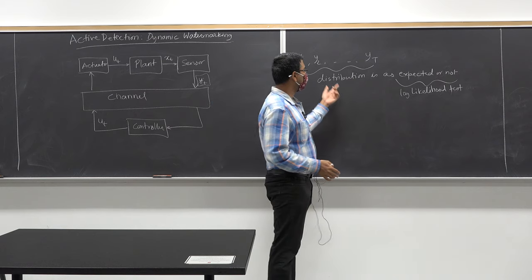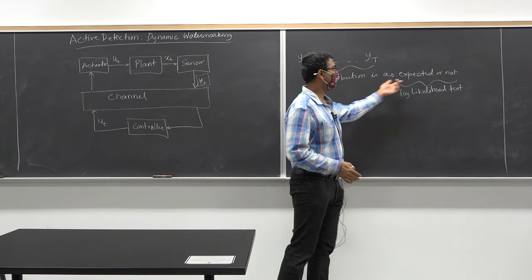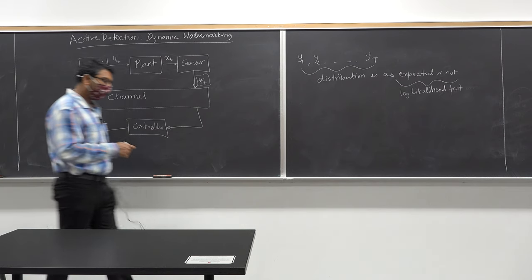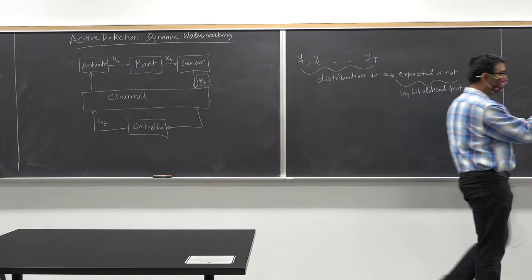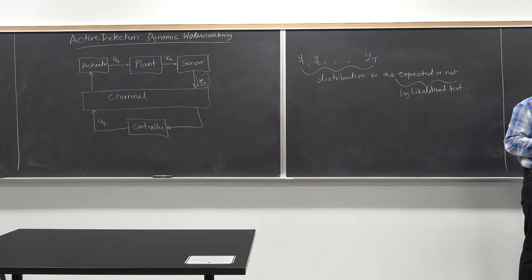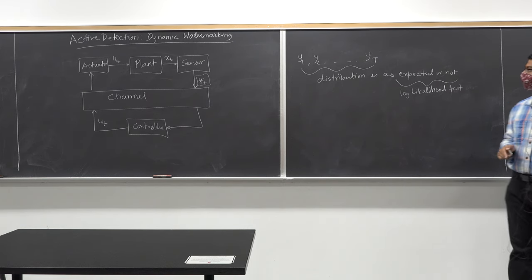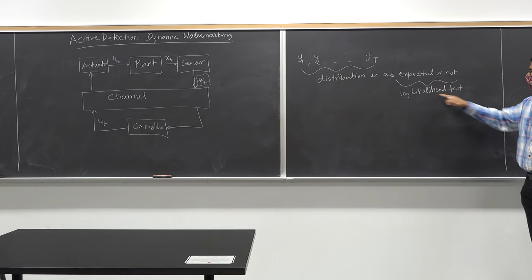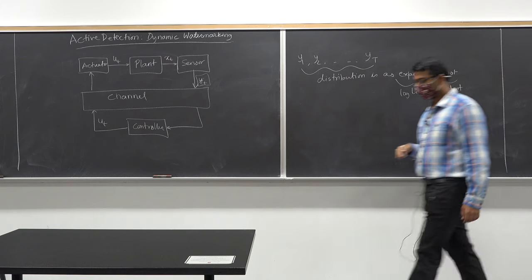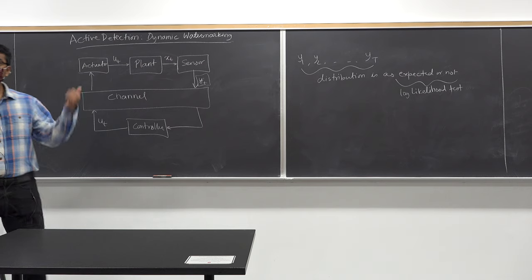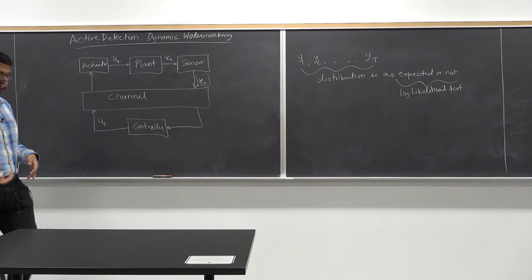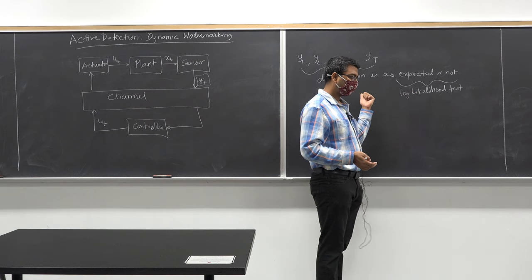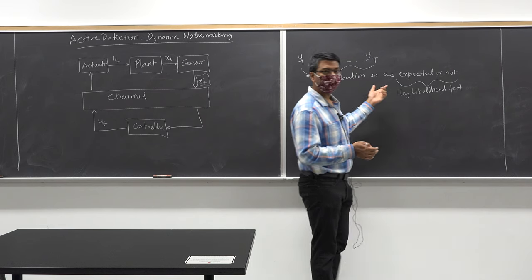The log likelihood test tells you whether a sequence of observations is coming from a specific expected distribution. The problem is: suppose an adversary does a replay attack — feeding in temperature readings from yesterday. That distribution is the same as the expected one because it came from an unattacked situation. There is no way the log likelihood test will detect the attack because yesterday's temperature distribution is the same as today's.